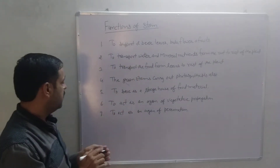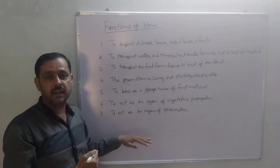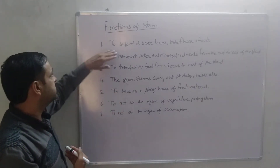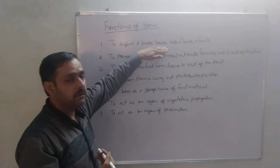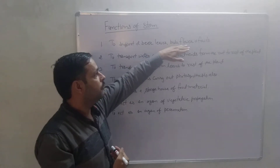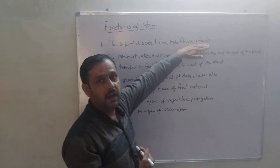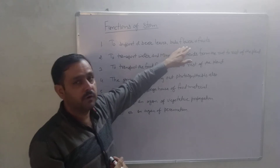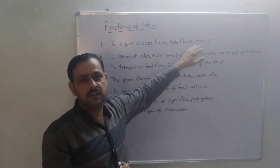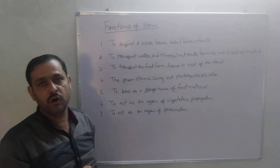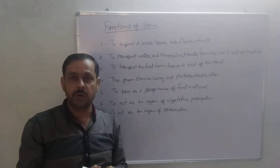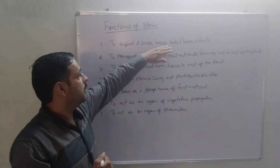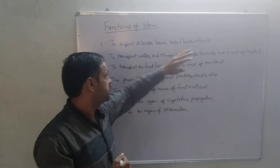What are the functions of stem? First, to support and bear leaves, buds, flower and fruits. These structures — leaves, buds, flowers and fruits — are attached on the stem or its branches. So the first function is to support and bear leaves, buds, flower and fruits.